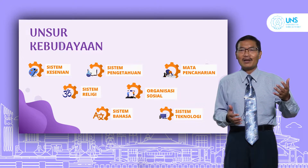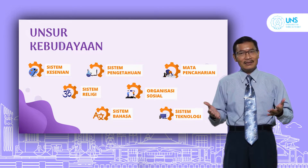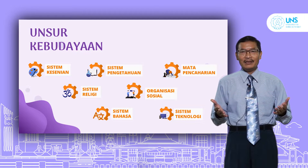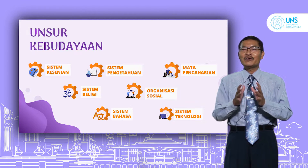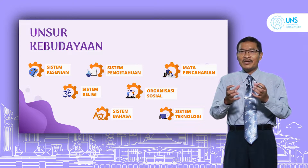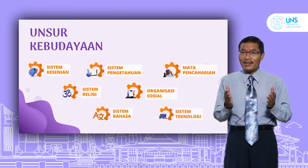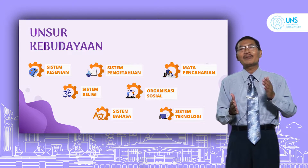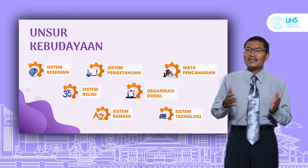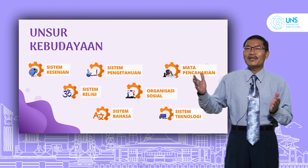Unsur-unsur seni rupa ada warna, garis, bidang, tekstur, dan titik. Semuanya berangkai menjadi suatu visual sebagai suatu wujud yang diatur dengan segala hal sehingga merupakan suatu bentuk yang menarik. Sesungguhnya itu tidak terpisah dengan konteks sosiologisnya atau masyarakatnya, dan di dalamnya dengan konteks kebudayaannya.